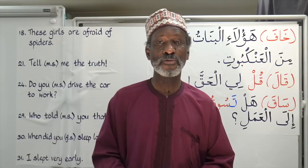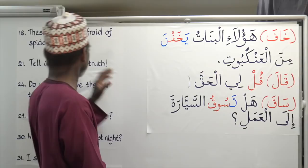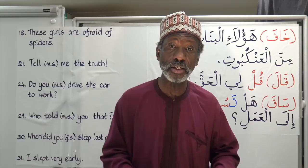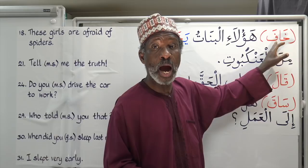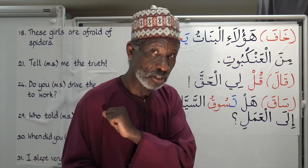Let's do more samples from exercise 12. Number 18: 'These girls are afraid of spiders.' We're going to use the verb Khafa — the verb to be afraid. Khafa means 'he was afraid.'